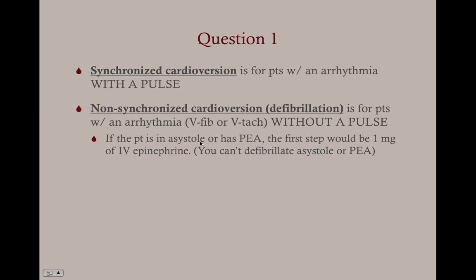If the patient is in asystole or pulseless electrical activity — some kind of rhythm but no pulse — then the first step is medical. While giving CPR, we administer one milligram of IV epinephrine. The simple reason is you can't defibrillate something that's not a rhythm. With PEA, you're getting electrical activity but no pulse. So VFIB and VTAC go straight to defibrillation, then you go through your ACLS protocol giving epinephrine or vasopressin. Asystole or PEA goes straight to epinephrine or vasopressin.